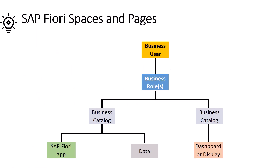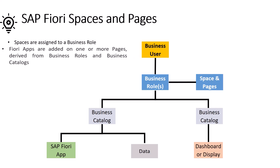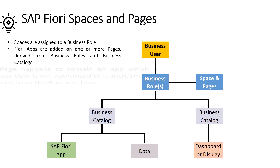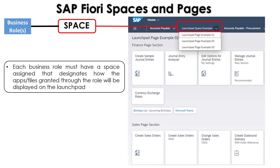Before we work on SAP Fiori spaces and pages through the Fiori apps, I'll mention some facts. You've already seen the hierarchical structure to access a SAP Fiori app through a business catalog assigned to a business role, which is assigned to a username. A space or spaces are assigned to a business role. Fiori apps are added on one or more pages derived from business roles and business catalogs. If a page contains an app which a business user is not authorized to launch, that app is hidden from the user. Each business role must have a space assigned that designates how apps or tiles will be displayed on the launchpad.